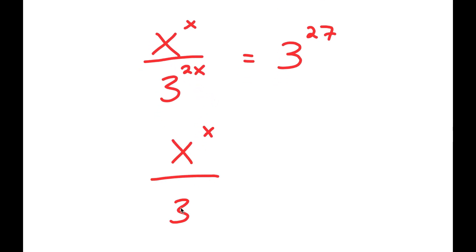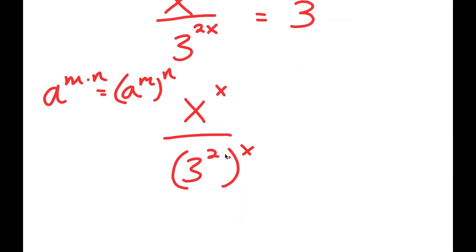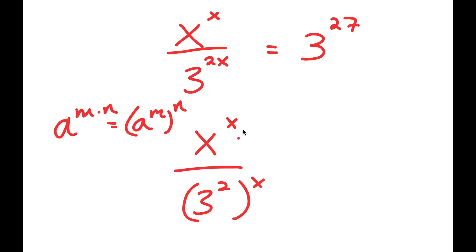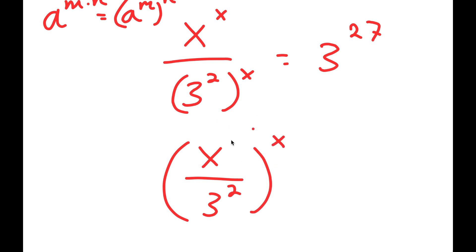Now, 3 to the power of 2x is the same thing as 3 to the power of 2 to the power of x, because if I have a to the power of m times n, this is equal to a to the power of m to the power of n. And now I can rewrite this as x over 3 squared, which is x over 9, to the power of x. Because both terms have the power of x, I can combine them into a whole base to the power of x.